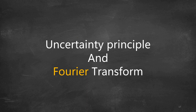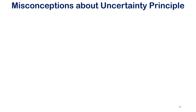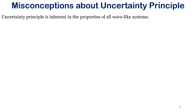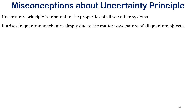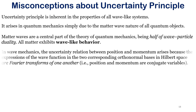Uncertainty and Fourier transform are closely related. Historically the uncertainty principle has been confused with the observer effect in physics — the idea that measurements of a system cannot be made without affecting the system. However, Heisenberg utilized such an observed effect at the quantum level. The uncertainty principle is something inherent to wave-like systems, and we know from de Broglie's equation that quantum mechanics is simply due to the matter wave of quantum objects.